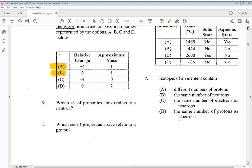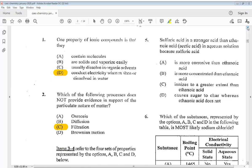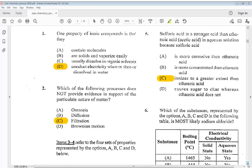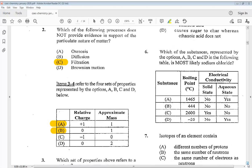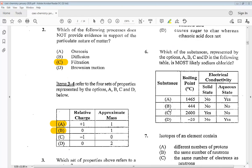Let's go to number five. Sulfuric acid is a stronger acid than ethanoic acid or acetic acid in aqueous solution because sulfuric acid: A. is more corrosive than ethanoic acid, B. is more concentrated than ethanoic acid, C. ionizes to a greater extent than ethanoic acid, D. causes sugar to char whereas ethanoic acid does not. So the answer for five is C. Ionizes to a greater extent than ethanoic acid. Six. Which of the substances represented by the options A, B, C and D in the following table is most likely sodium chloride? So we know it is A.